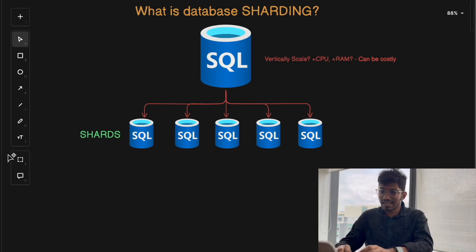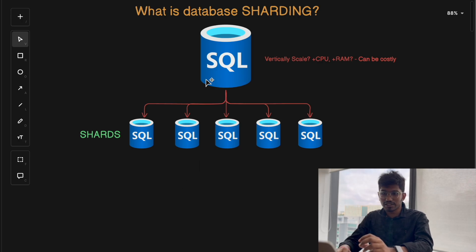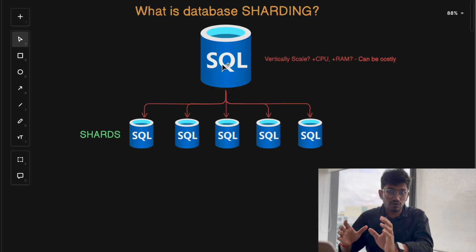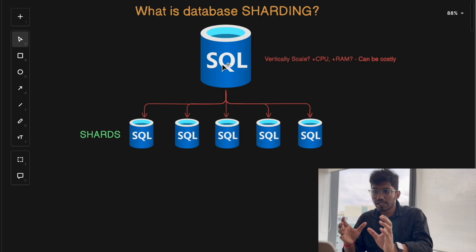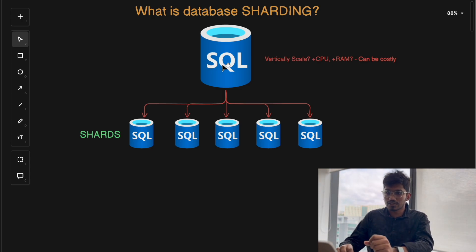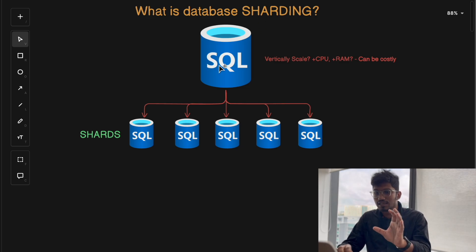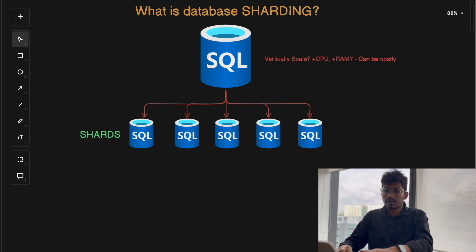But why do you even need sharding? As your data grows and the number of requests to your database increases, things like latency, response times, and performance changes become a bottleneck and start to degrade. This happens because a single database can handle only so much traffic before it becomes overwhelmed.